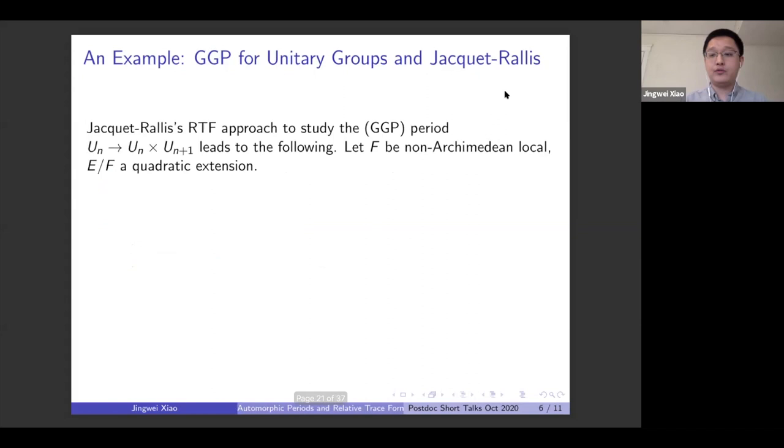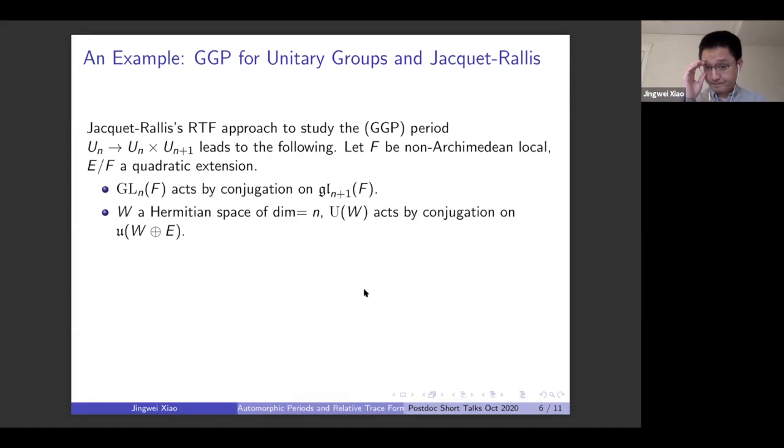That's the strategy. And I'll go into one specific example, because that's what I'm working on for the moment. And this is the Jacquet-Rallis approach to the GGP periods in the unitary case. And what you want to do is you have the group U_n, which sits as a subgroup, diagonal subgroup of U_n × U_{n+1}. And there is a Jacquet-Rallis approach, give you a comparison of relative trace formulas, and you do all those reductions, leads you to the following local picture.